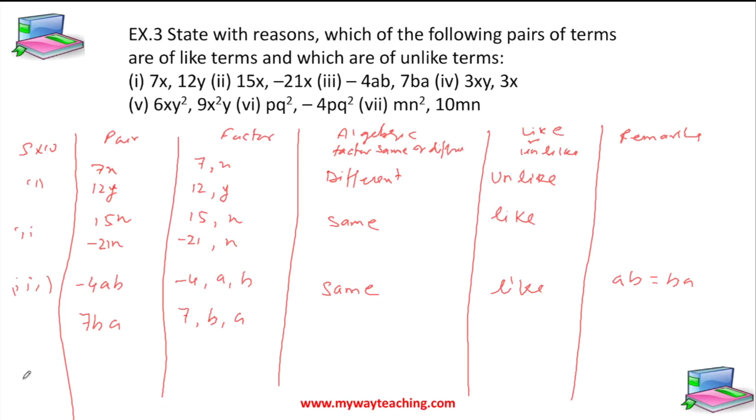Now the fourth one is 3xy and 3x. The factors are 3, x, and y, and 3 and x. These are different algebraic factors, so it's unlike.